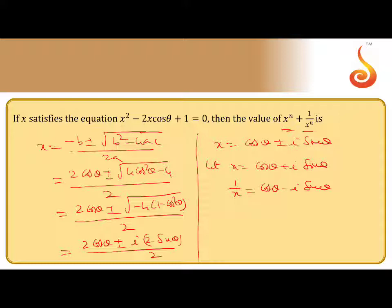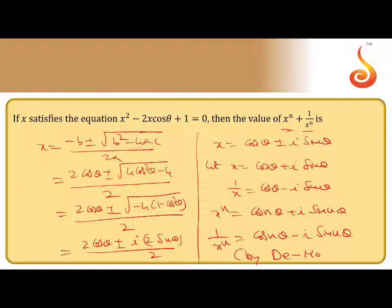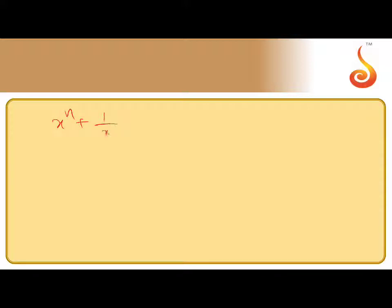We want x^n plus 1 by x^n. By De Moivre's theorem, x^n equals cos(nθ) plus i·sin(nθ), and 1 by x^n equals cos(nθ) minus i·sin(nθ).